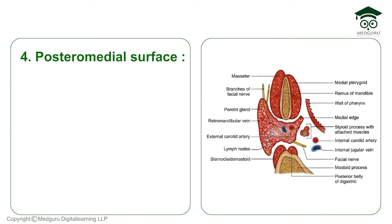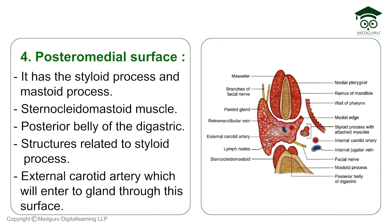The posteromedial surface faces the mastoid and styloid processes with their related structures: the sternocleidomastoid muscle, the posterior belly of the digastric, the styloid process with its attached structures, and importantly, the external carotid artery which enters the gland through this surface. Arteries are always on the deep side, which helps us remember this relation.